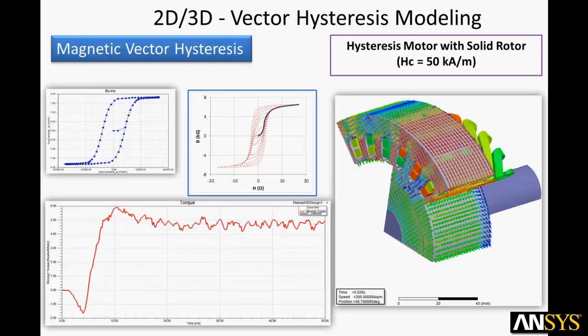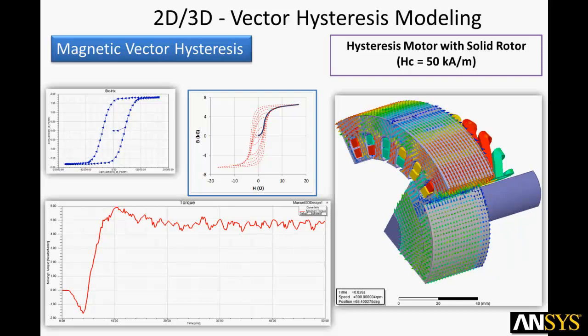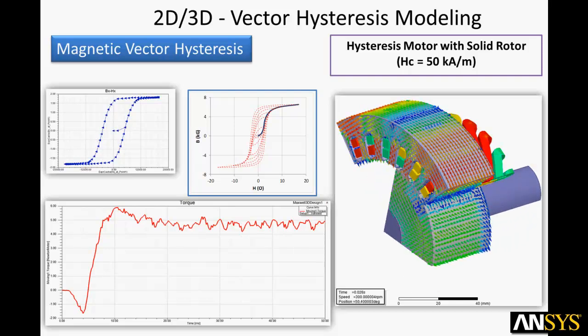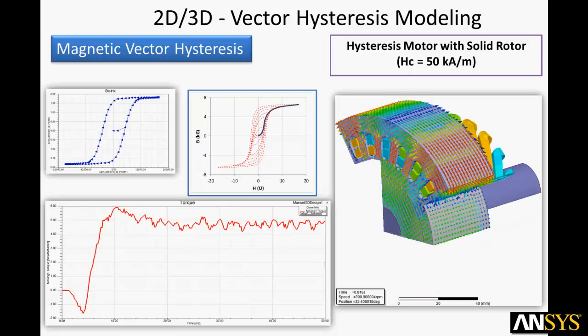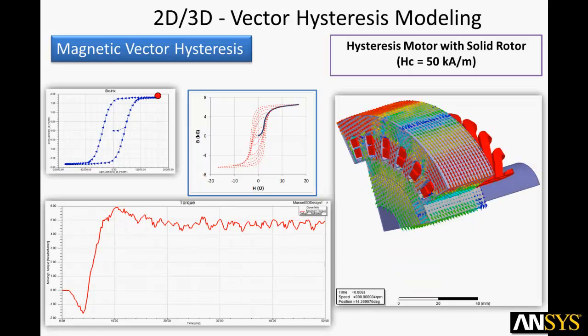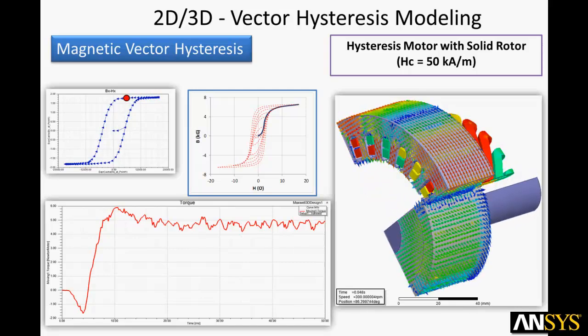Here you see an example that requires the most advanced magnetics modeling. This hysteresis motor has a solid rotor with a thin layer of ferromagnetic material that provides dynamic magnetic pole creation. This can be modeled only if the ferromagnetic material demonstrates hysteresis.